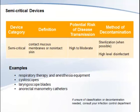Semicritical devices are devices that contact intact mucous membranes or non-intact skin. They do not ordinarily penetrate tissues or otherwise enter normally sterile areas of the body. These devices should be reprocessed to be free from all microorganisms; however, intact mucous surfaces are relatively resistant to small numbers of spores. Examples include endotracheal tubes, laryngoscope blades and other respiratory equipment, esophageal manometry probes, and diaphragm fitting rings. At a minimum, certain semicritical items require high-level disinfection using chemical disinfectants. Endoscopes, which contact intact mucosal surfaces and may be used with invasive devices such as biopsy forceps, are an example where sterilization may be preferable to high-level disinfection if feasible.